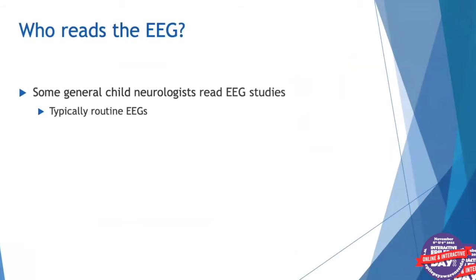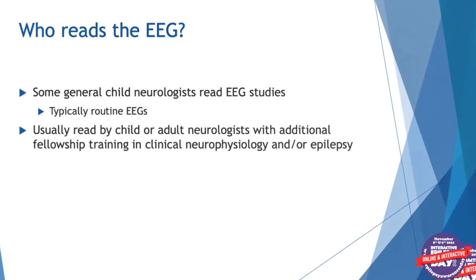Who reads the EEG? Some general child neurologists read EEG studies. These doctors go to medical school and then complete a residency in child neurology, typically five years after medical school, and usually read routine EEGs. Most of the time, any type of EEG is read by child or adult neurologists with additional fellowship training in clinical neurophysiology and/or epilepsy — providers who have done residency and then additional specialized training in neurophysiology and interpretation of EEG studies.